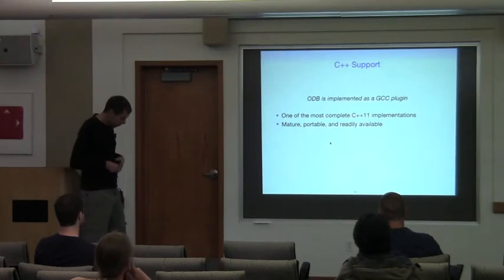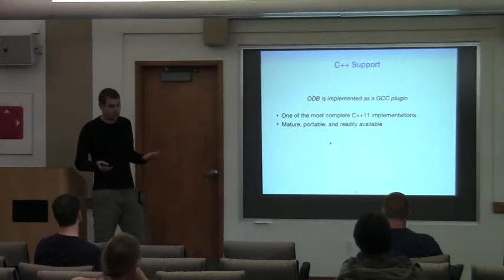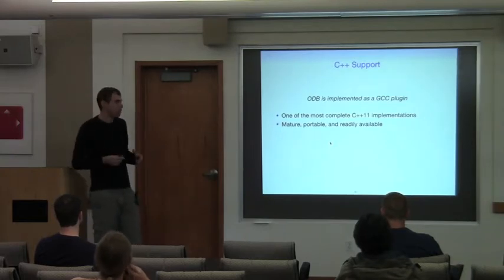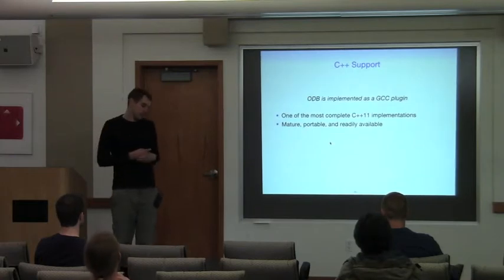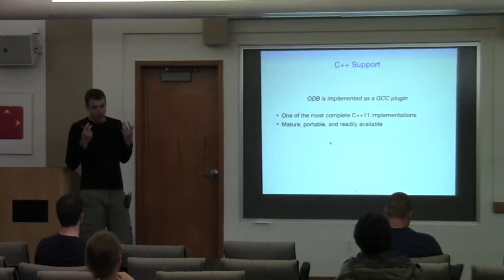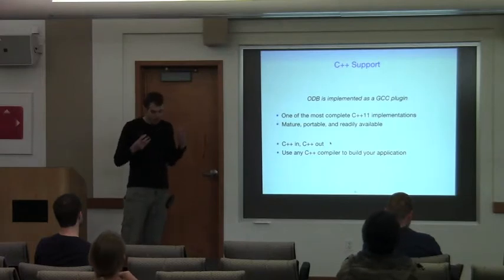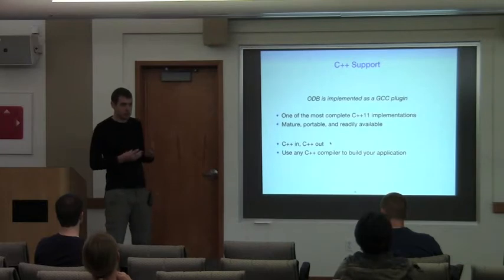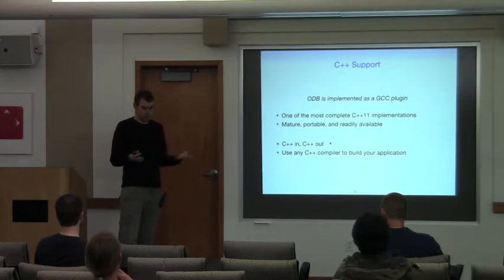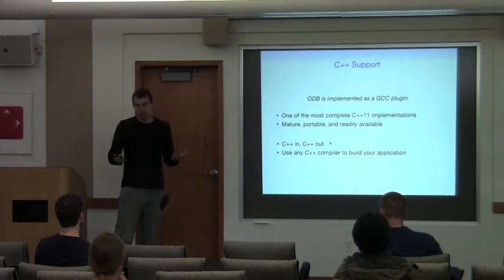So how can ODB automatically generate database conversion code for any standard C++98 or C++11? There's no magic here and we didn't implement our own compiler. Underneath, ODB is implemented as a GCC plugin. Advantages of using GCC are maturity, portability, and one of the most complete C++11 implementations out there. Now some of you may think that if ODB uses GCC underneath, your application also has to be built with GCC — this is not the case. ODB is implemented in standard C++ and the generated code is standard C++, so we can use any reasonably modern C++ compiler to build the runtimes and generated code.